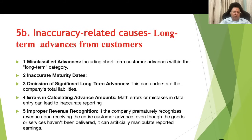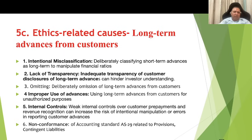Inaccuracy-related causes for long-term advances from customers: misclassified advances, inaccurate maturity dates, omission of significant long-term advances, errors in calculating advanced amounts, and improper revenue recognition — if the company prematurely recognizes revenue upon receiving the entire customer advance even though goods or services haven't been delivered, it can artificially manipulate reported earnings. Ethics-related causes: intentional misclassification, lack of transparency, inadequate disclosure of long-term advances, omitting or improper use of advances, using advances for unauthorized purposes, weak internal controls, and non-conformance to Accounting Standard 29.